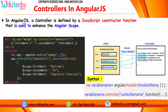Now let's talk about the controller. In AngularJS, a controller is defined by a JavaScript constructor function that is used to enhance the Angular scope. Here is the syntax: var [variableName] = angular.module('moduleName', []); and then variableName.controller — app.controller — where you give the controller name and a function. This is the syntax of your controller.